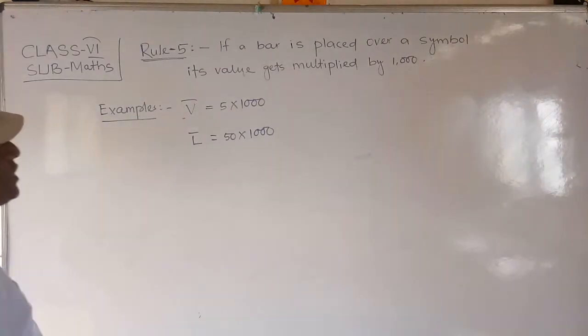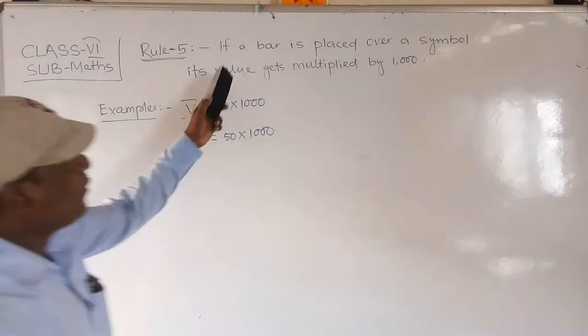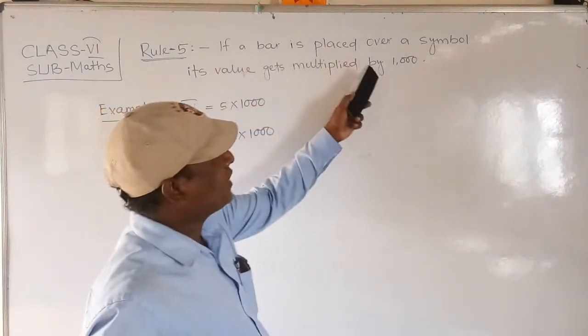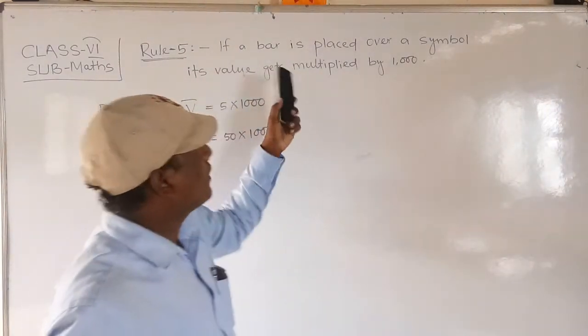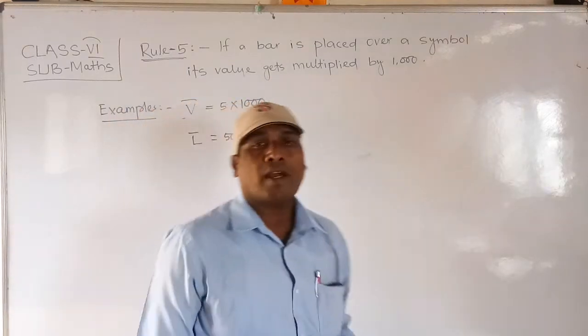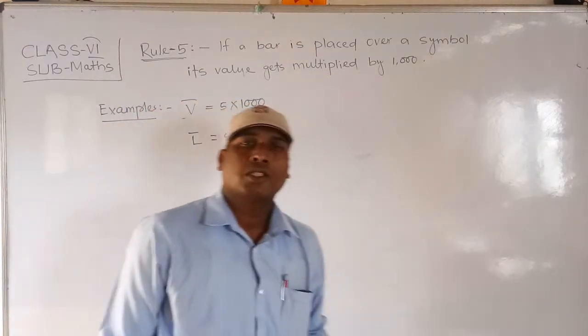Rule 5 is: if a bar is placed over the symbol, its value gets multiplied by 1000.